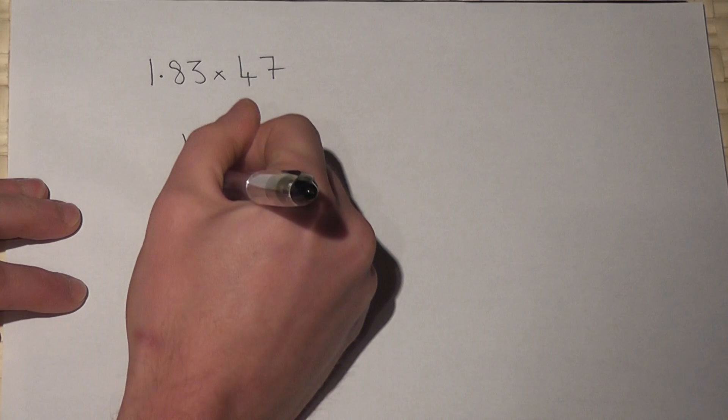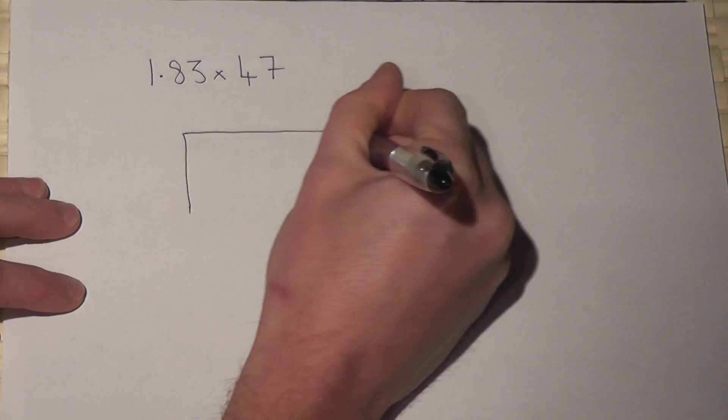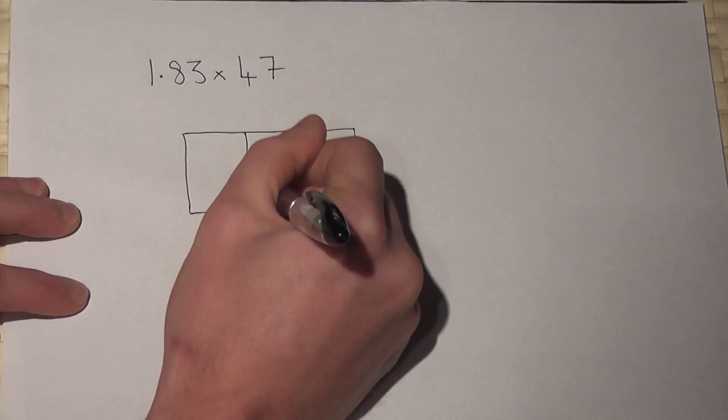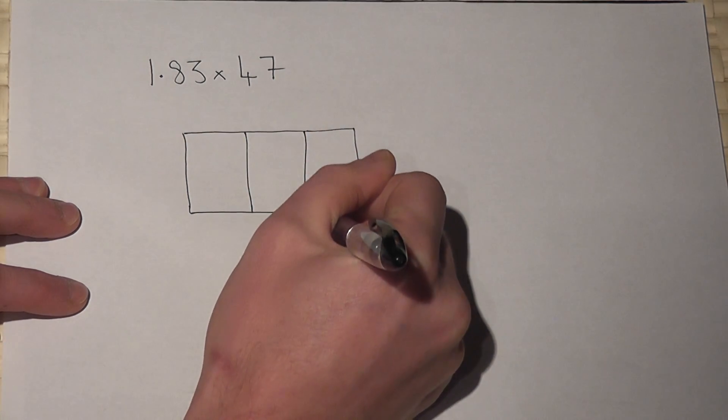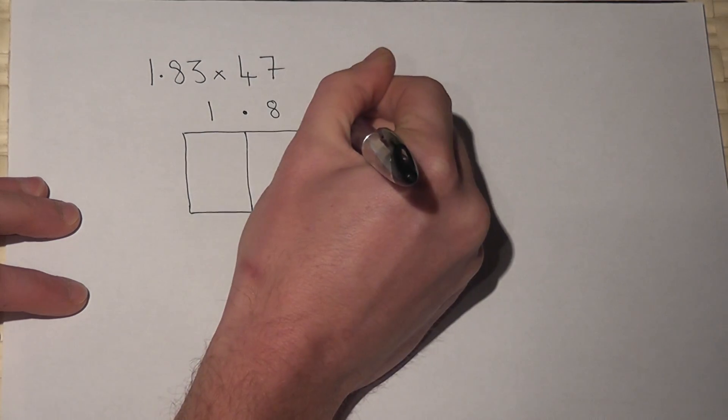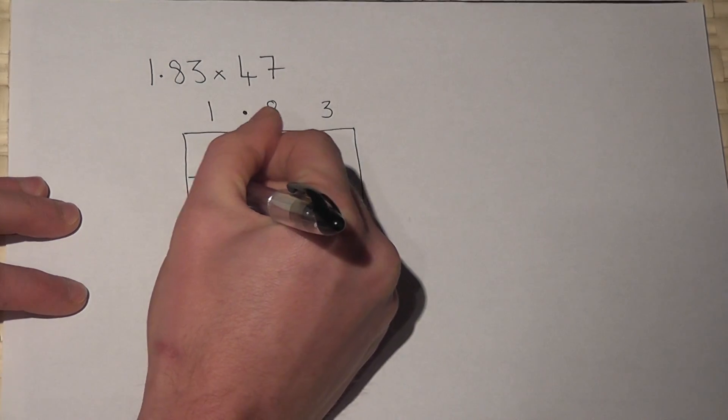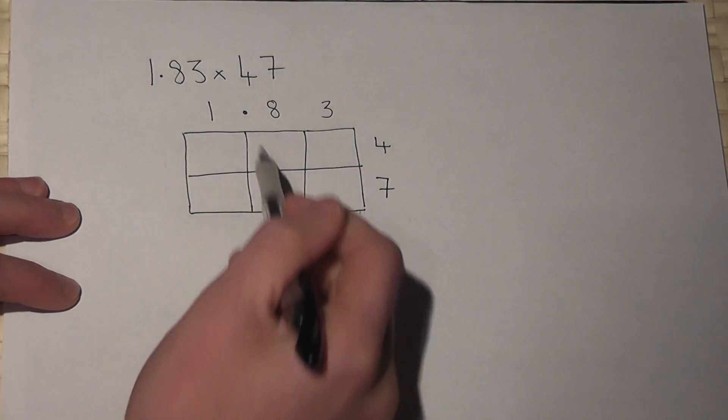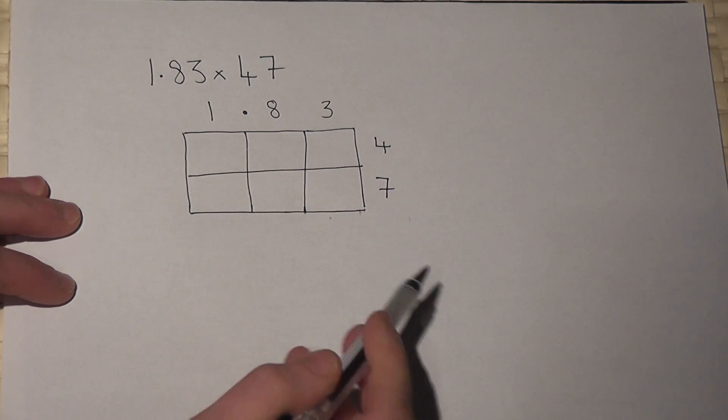Now if we draw a grid, we've got 1.83 and we've got 47. The decimal point is placed above the vertical line.